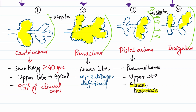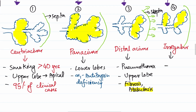Irregular emphysema has irregular involvement and usually occurs near scar tissue. For example, if a TB infection heals, there is a possibility of developing emphysema at that site. To summarize: centriacinar is associated with smoking in the upper lobe (95% of clinical cases); panacinar involves the whole acinus in the lower lobe with alpha-1 antitrypsin deficiency; distal acinar is due to forces on the septa (fibrosis, atelectasis) with potential for pneumothorax; and irregular occurs near old healed inflammatory scars such as those from TB.